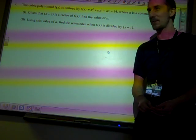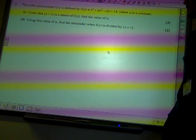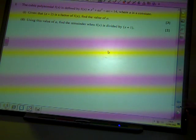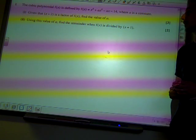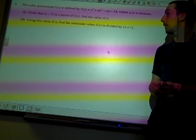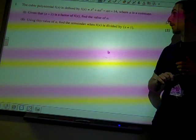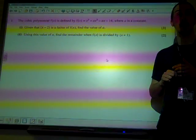The cubic polynomial f(x) is defined by x cubed plus x squared minus x minus 14, where a is a constant. Given that x minus 2 is a factor of f(x), find the value of a.